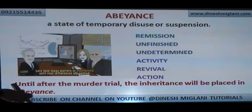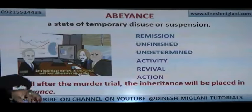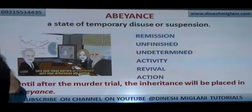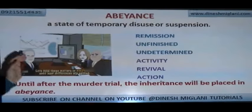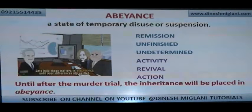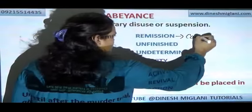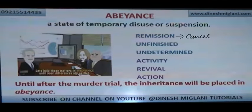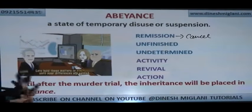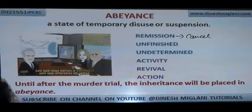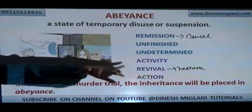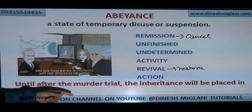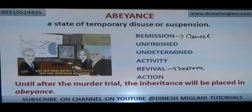Abeyance. Abeyance is a state of disuse — a state where someone or something is not in use for a time duration, or suspended. Synonym: remission, meaning cancellation; also unfinished or undetermined. Antonyms are activity, revival — something restored — and action. Example: 'Until after the murder trial, the inheritance will be placed in abeyance' — the inheritance will be suspended.